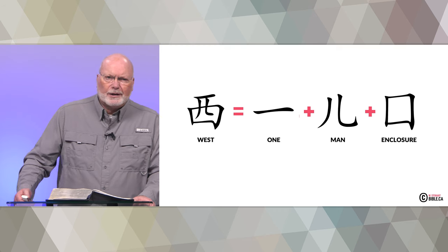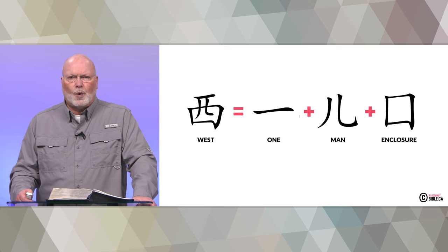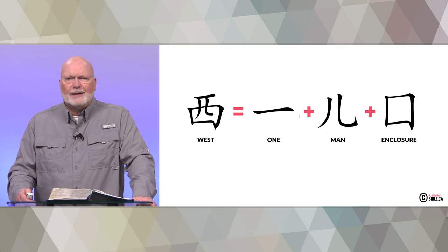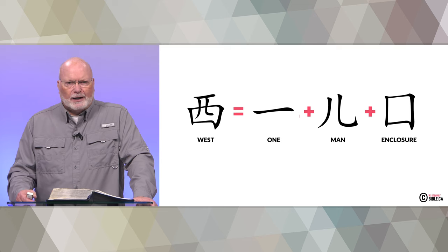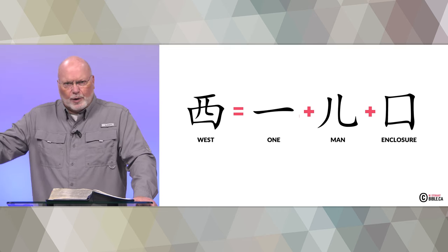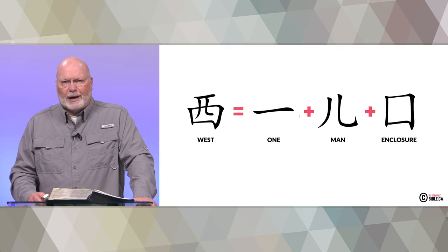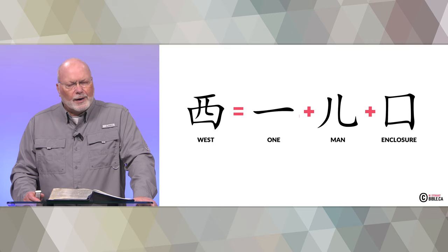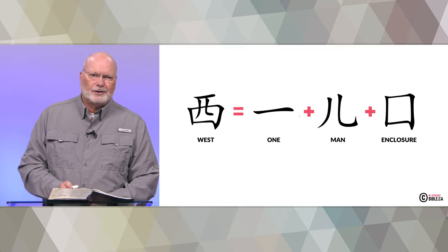Then we have the Chinese concept for 'West,' which is the symbol for one and man in an enclosure — one man in an enclosure. The Chinese moved eastward from where the garden would have been, and now their symbol for West is represented by where they came from: one man in a garden. Where else would they get the idea for West to be one man in a garden if not from the account given in Genesis?